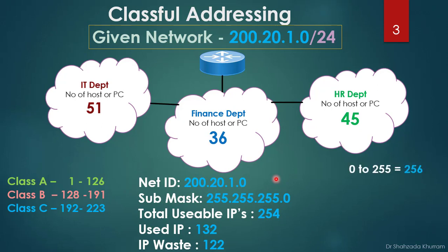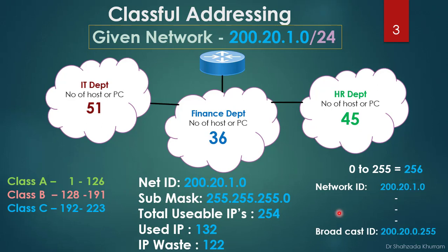Each octet has a total of 256 IPs, starting from 0 to 255 — 0 is also counted as an IP, so 0 to 255 gives 256 total. The first IP, 200.20.1.0, is the network ID.